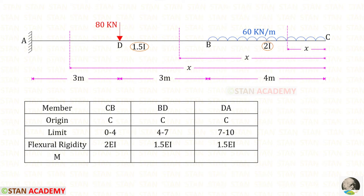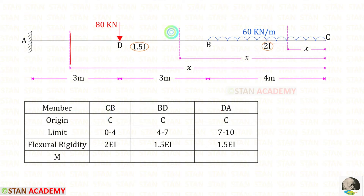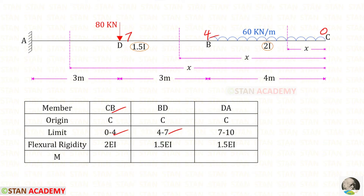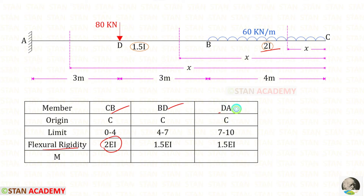Now let us make a table. The three members are CB, BED, and DA. For all sections, the origin is C. For CB the limit is 0 to 4; for BED it is 4 to 7; and for DA it is 7 to 10. The flexural rigidity for CB is 2EI since the moment of inertia is 2I. For BED and DA the moment of inertia is 1.5I, so the flexural rigidity is 1.5EI.